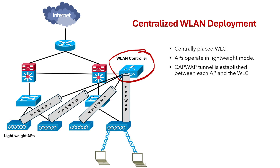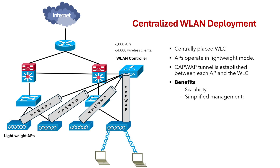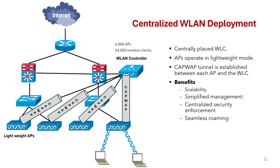Some benefits of centralized deployment include scalability — a single Cisco WLC can support up to 6,000 APs and 64,000 wireless clients, and if your network grows beyond this you can add more WLCs. There is also simplified management, as one controller can manage all APs. Another benefit is centralized security enforcement, since the WLC provides a convenient place to enforce security policies for all wireless users. Finally, seamless roaming allows users to move between APs while maintaining a stable connection — for example, walking across an office building without re-authentication.